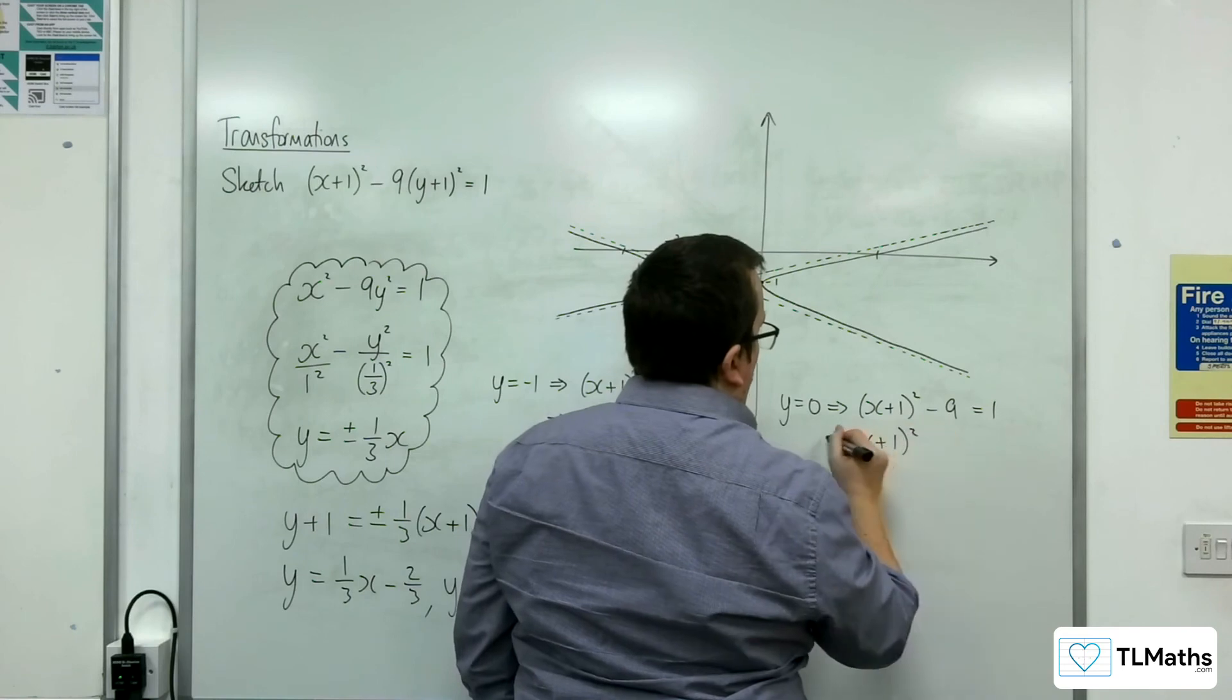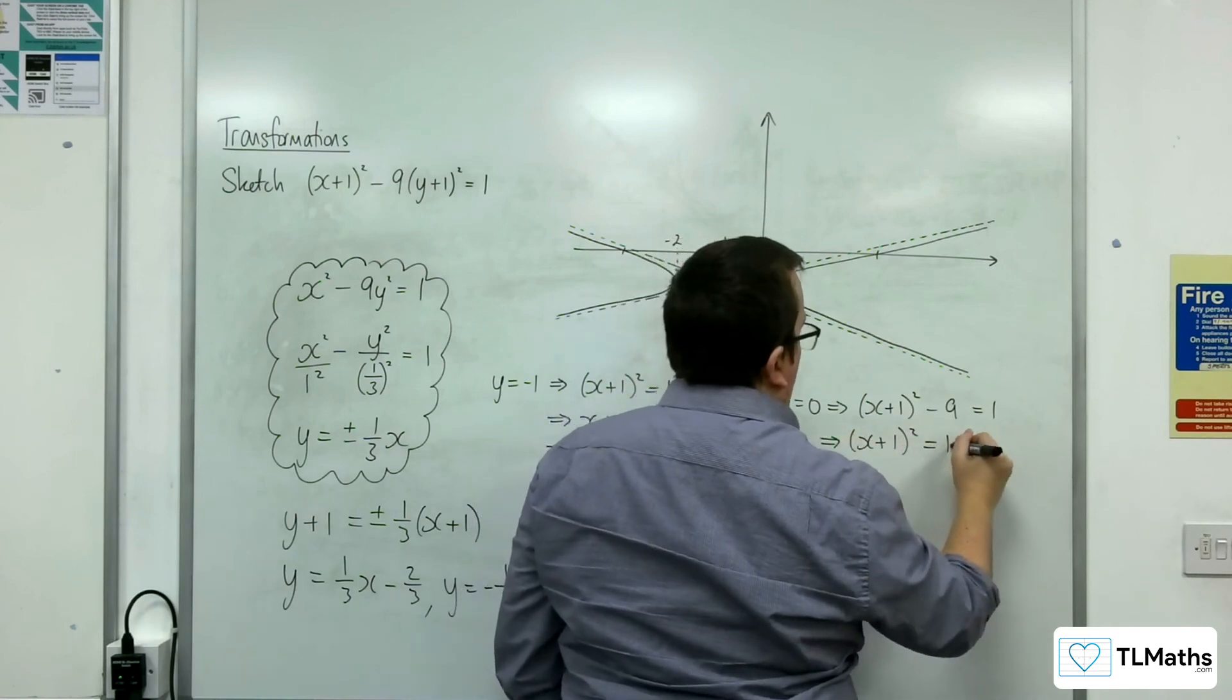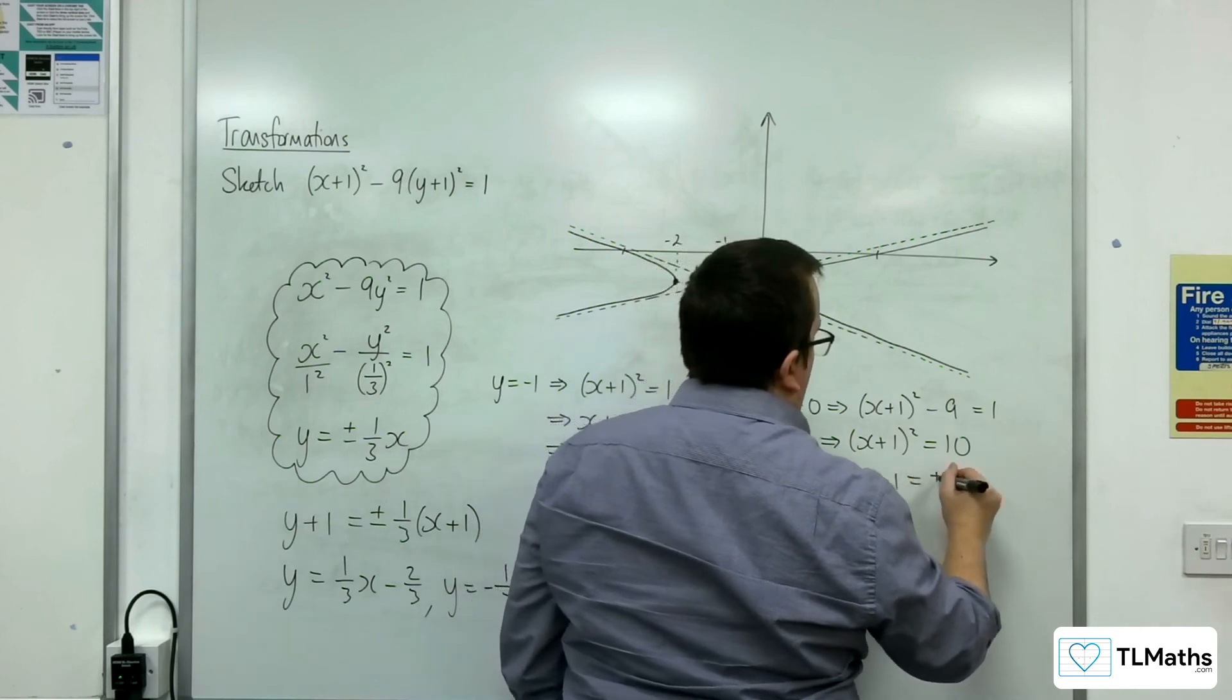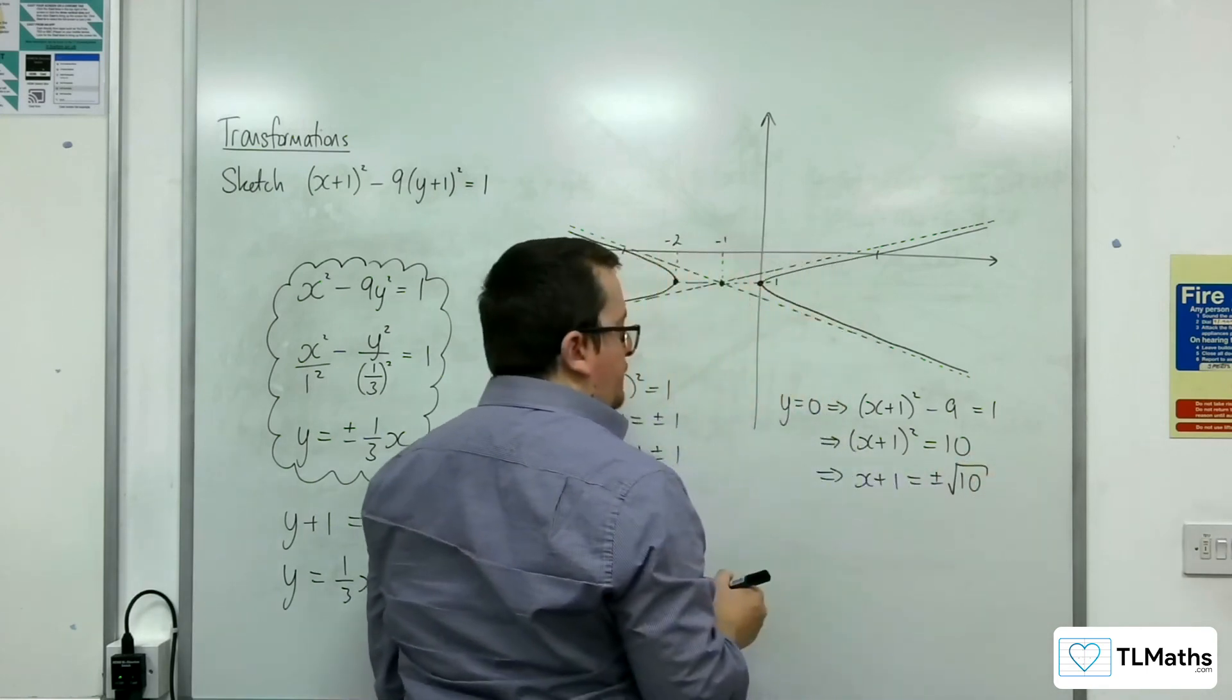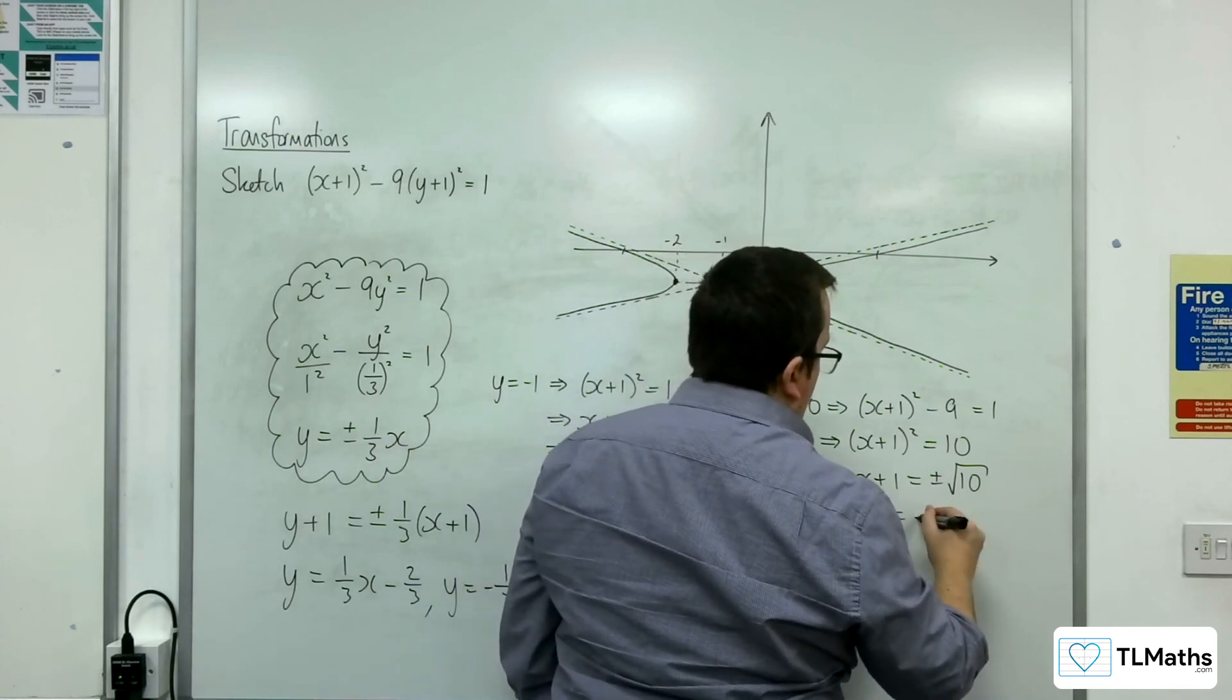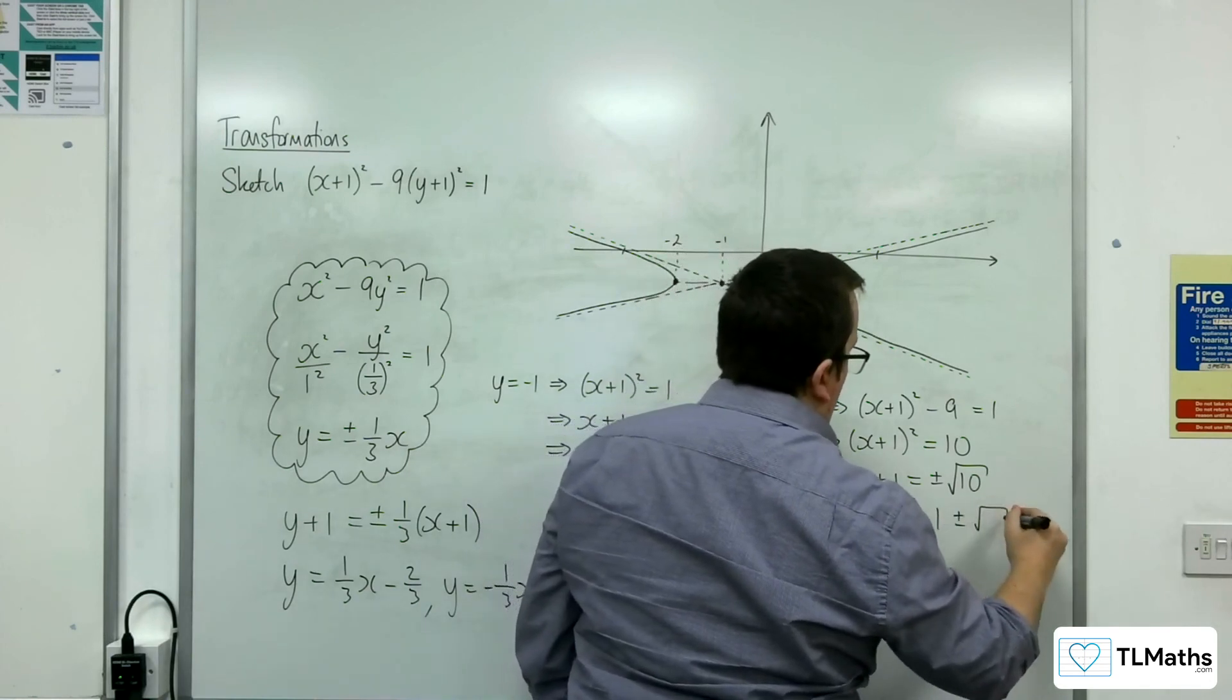So (x+1)² is going to be equal to 10. So x+1 is going to be equal to ±√10.